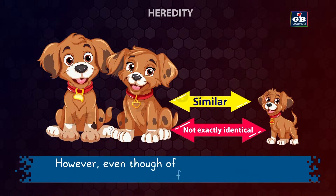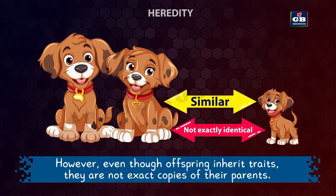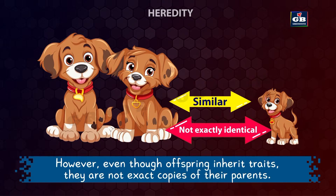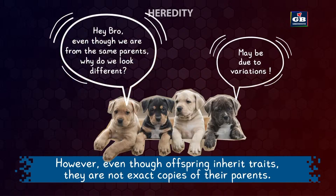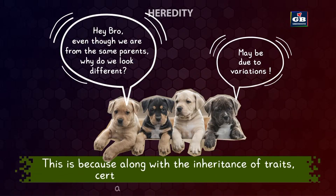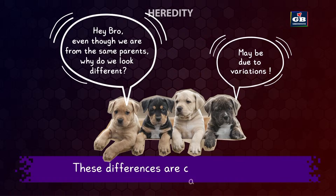However, even though offsprings inherit traits, they are not exact copies of their parents. This is because, along with the inheritance of traits, certain differences also arise. These differences are called variations.